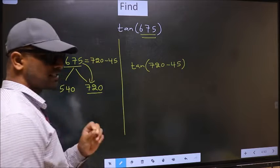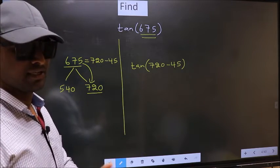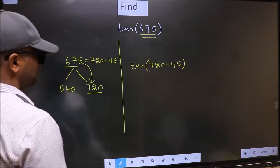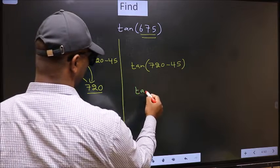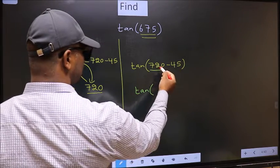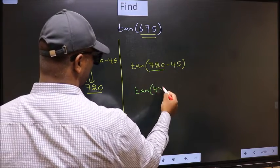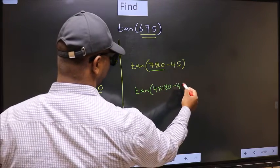This is your step 1. Next, tan. In place of this, now we should write 4 into 180 minus 45.